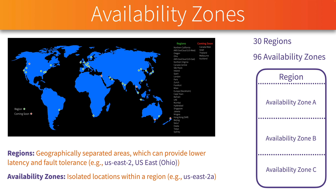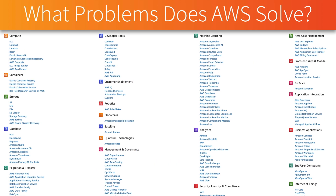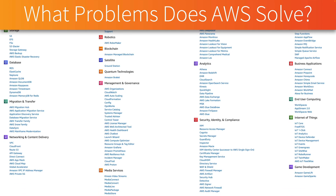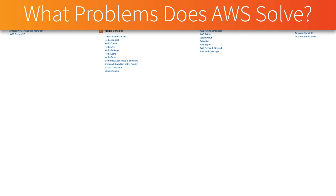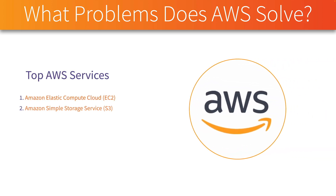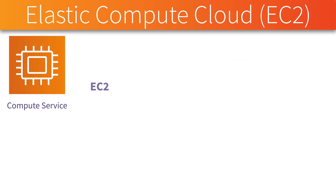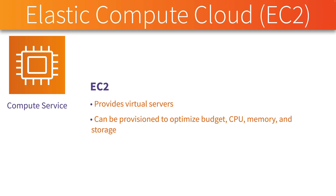Now that we understand the AWS Cloud global infrastructure, let's ask: what problems does AWS solve? It's not just the ability to stand up a virtual machine — there are currently over 200 services. Let's look at five of the more popular ones, beginning with EC2, or Amazon Elastic Compute Cloud. This allows us to provision a virtual server. We can optimize it for budget, for CPU performance, for memory if we have a large database, or for storage if we have large storage demands.